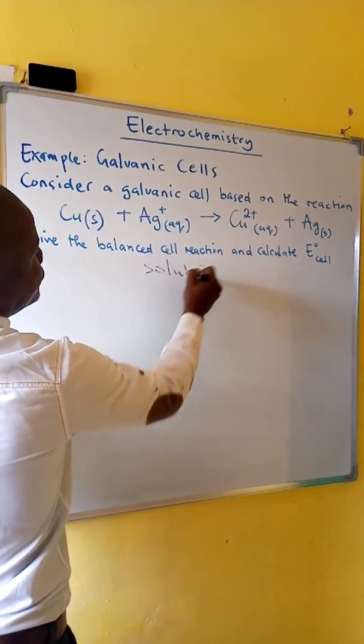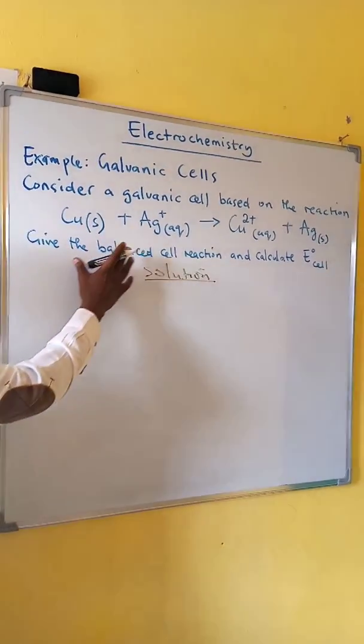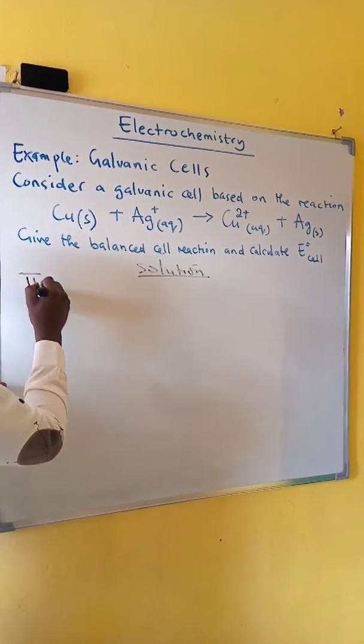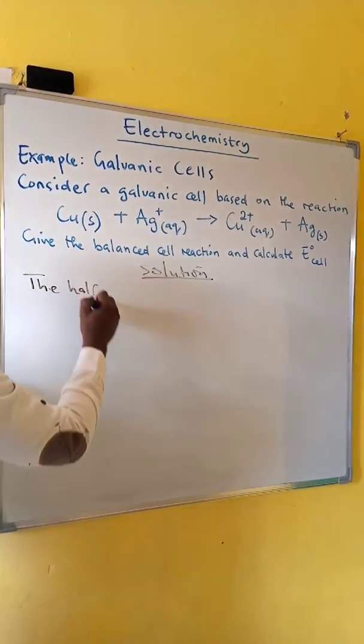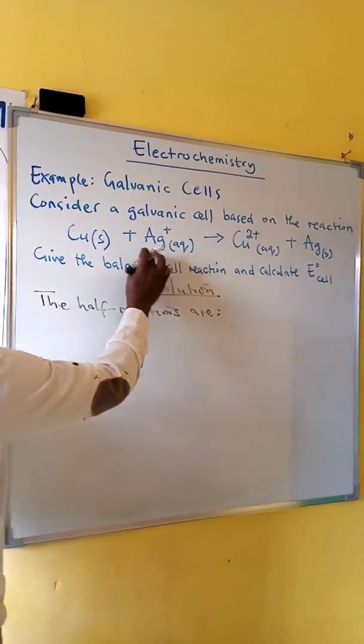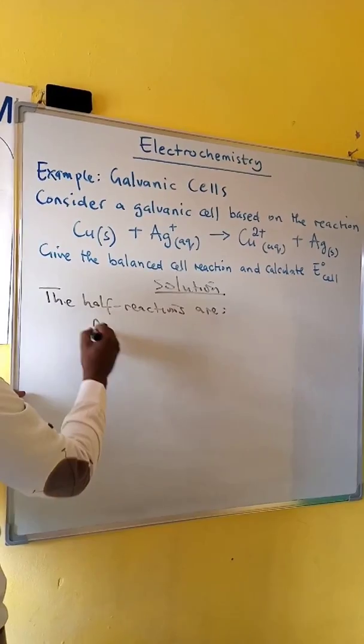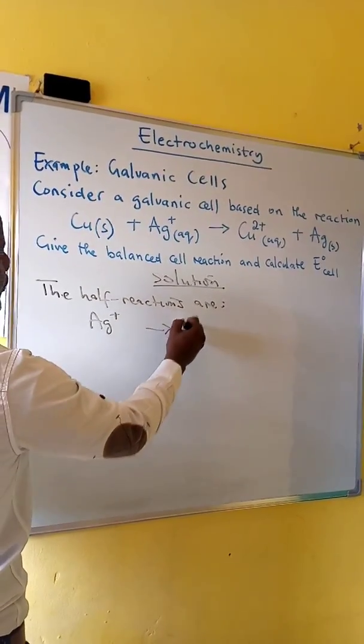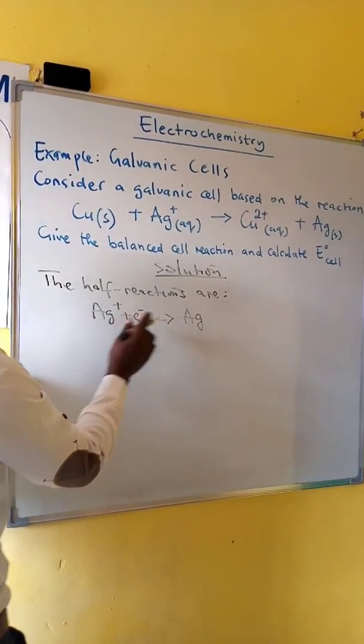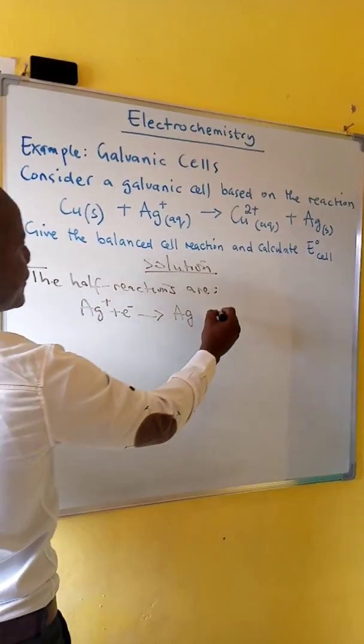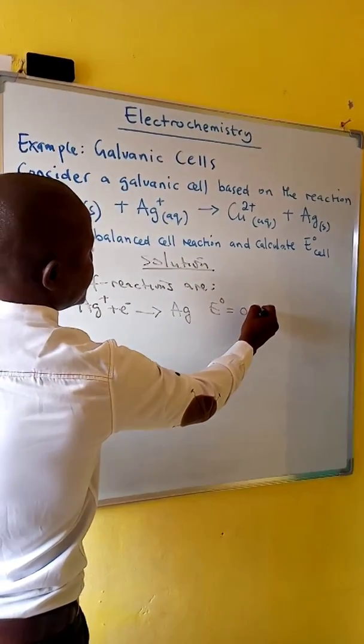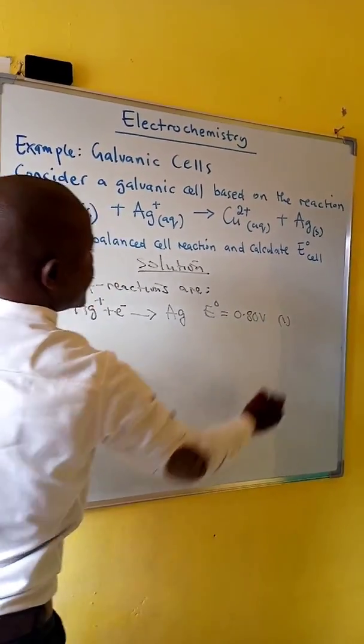Solution: we must first write the half reactions as reduction reactions. The half reactions are silver ion forms silver. Balance the charge. We have one electron there. Standard cell potential for this reaction is 0.80 volts. This is our reaction 1.